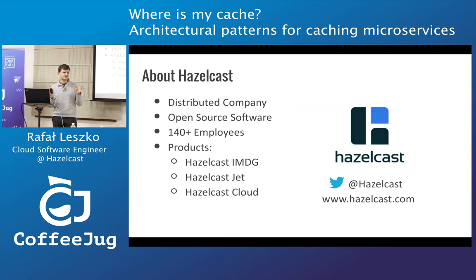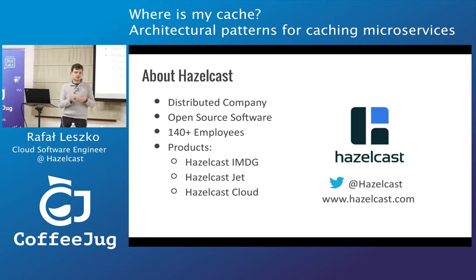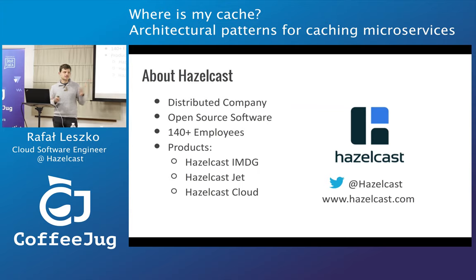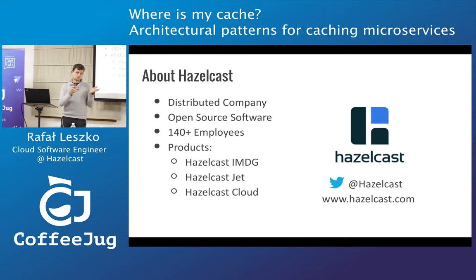We are like a small family, like engineers, there's around 40 of us. We have three products. The first one is Hazelcast, which you probably know — it's like an in-memory data grid solution. The second one is Hazelcast Jet, which is a stream processing library. And the third one is Hazelcast Cloud, which is Hazelcast provided as a service.